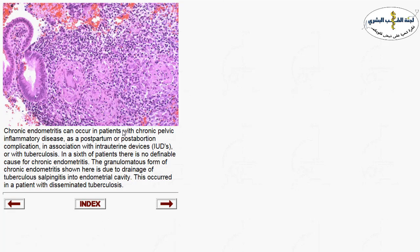Chronic endometritis is seen in patients with chronic pelvic inflammatory disease, postpartum complications, post-abortion complications, or associated with intrauterine devices. Here you can see granulomatous formation — a granuloma is a collection of histiocytes surrounded by chronic inflammatory cells — seen in disseminated tuberculosis affecting the endometrium.